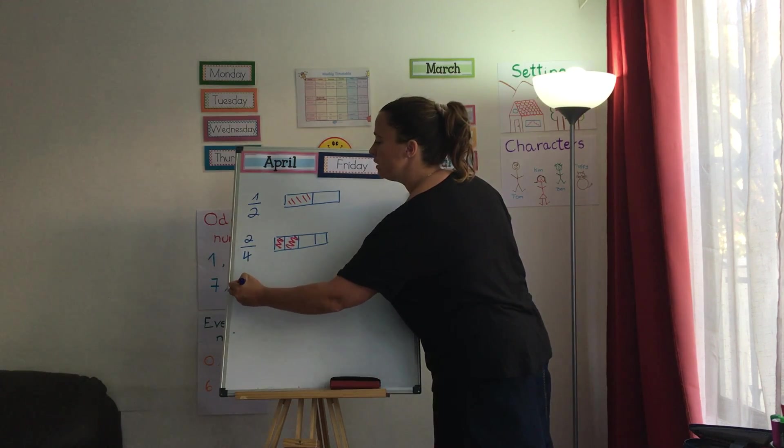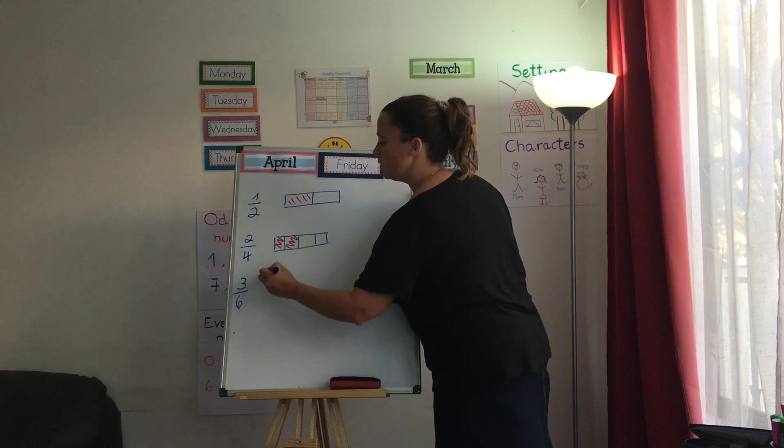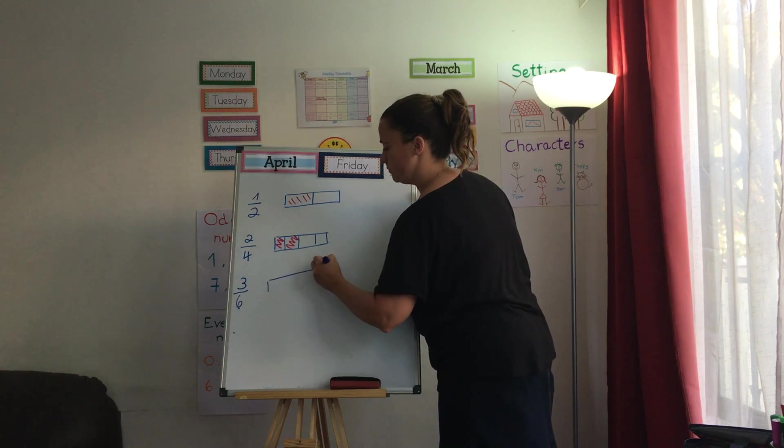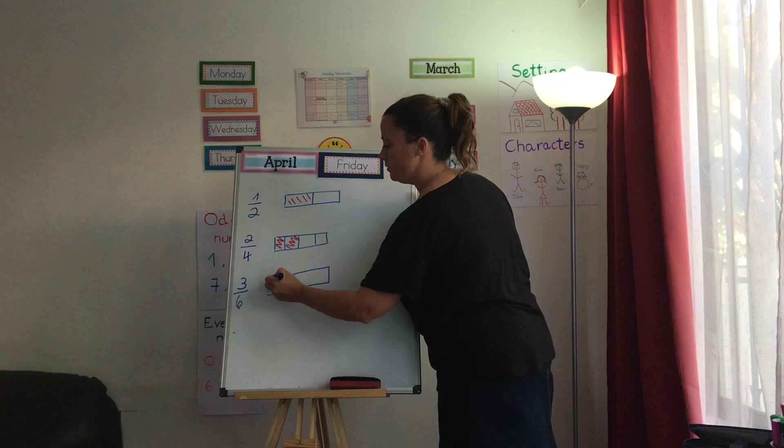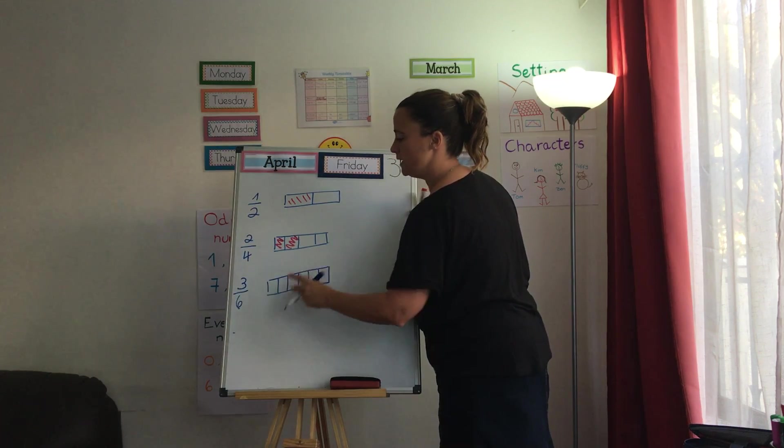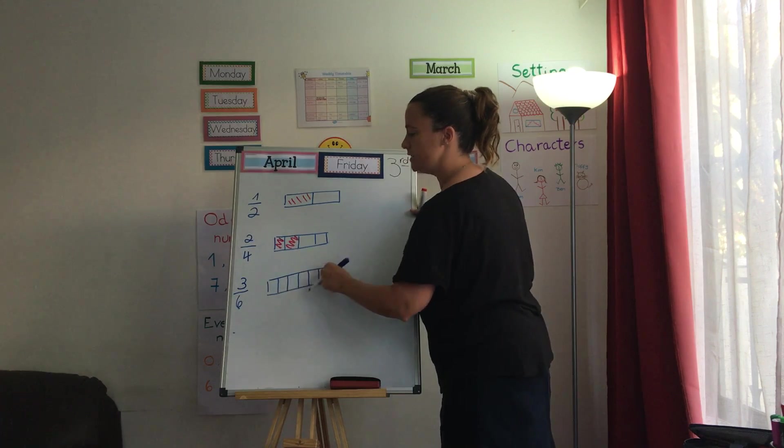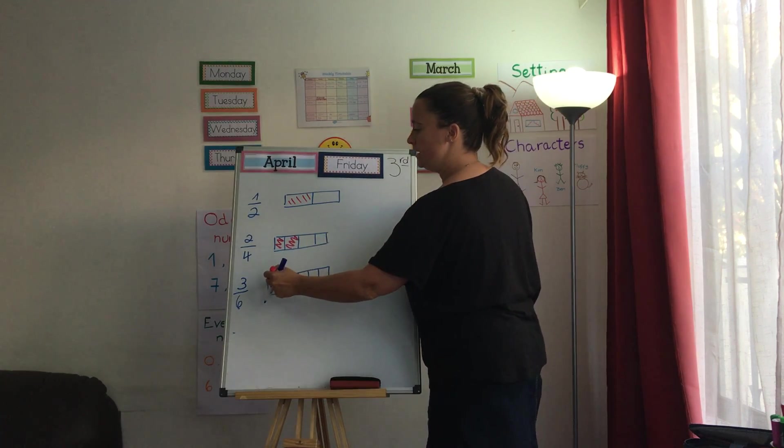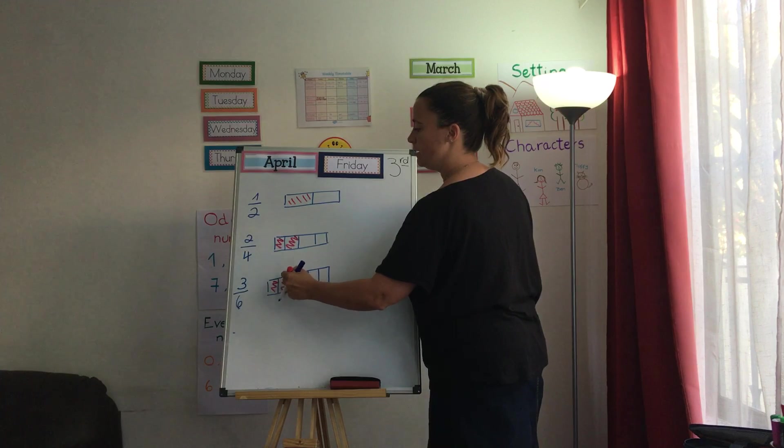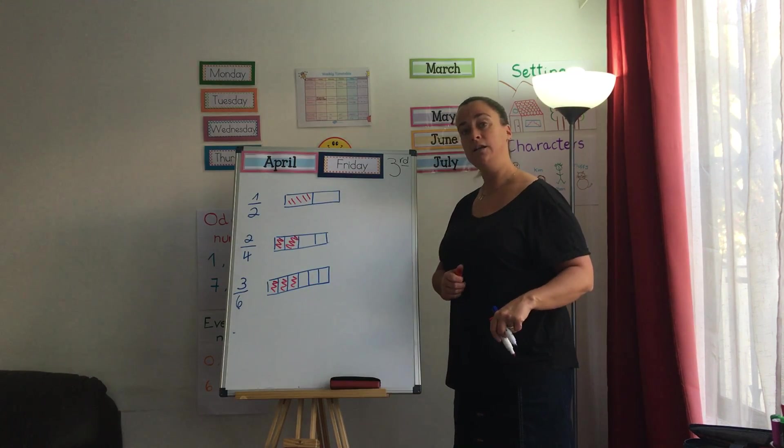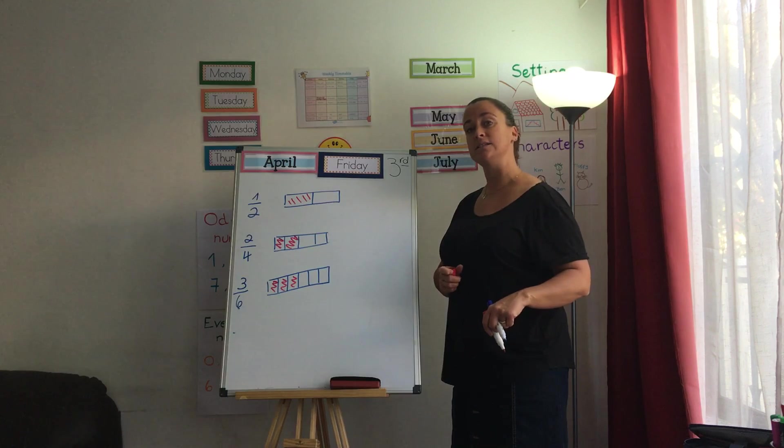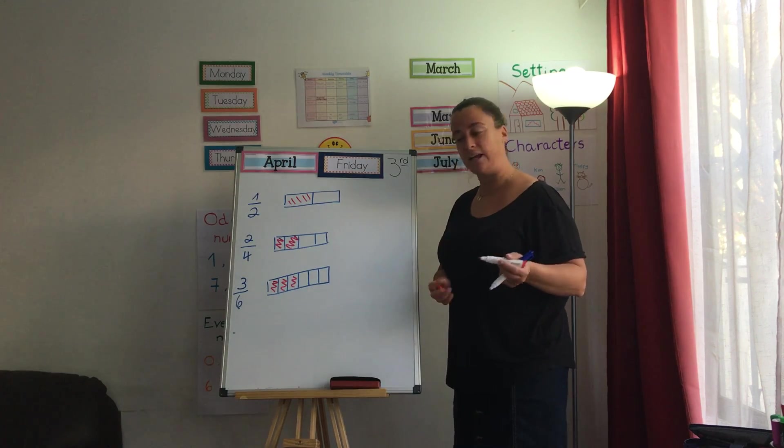If I've got this one. 1, 2, 3, 4, 5, 6. And I eat 3. How many are left? 3. So I eat half of my chocolate again.